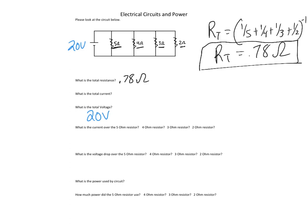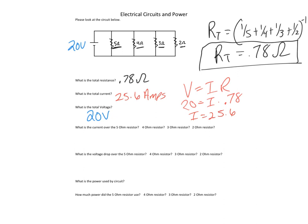To find total current, V equals IR, so 20 equals I times 0.78. Doing 20 divided by 0.78 gives I equals 25.6 amps total current. Notice the previous series circuit only had 1.43 amps — series circuits don't use nearly as much current as parallel circuits. Parallel circuits use a ton of current, which means they will use up a battery incredibly fast compared to a series circuit.